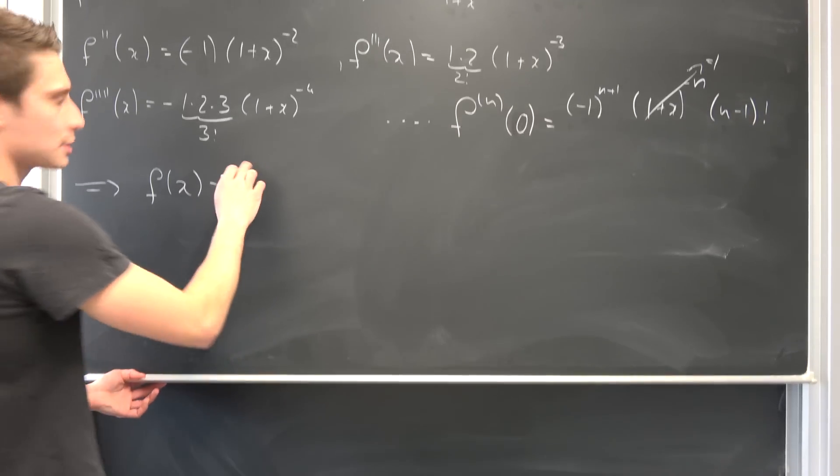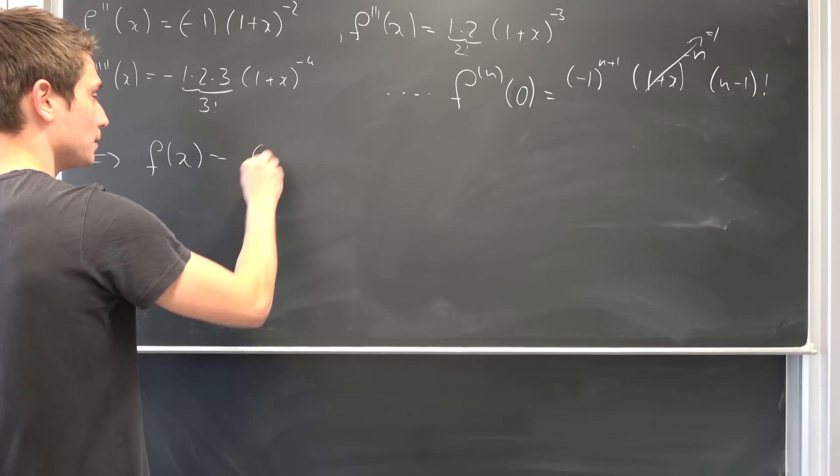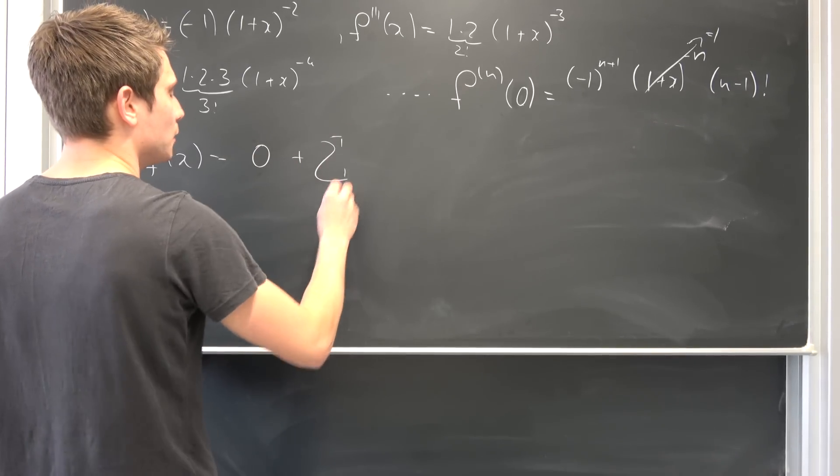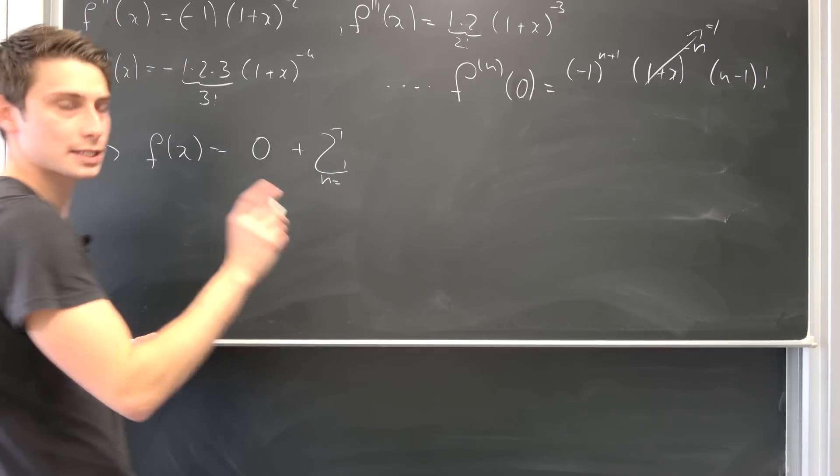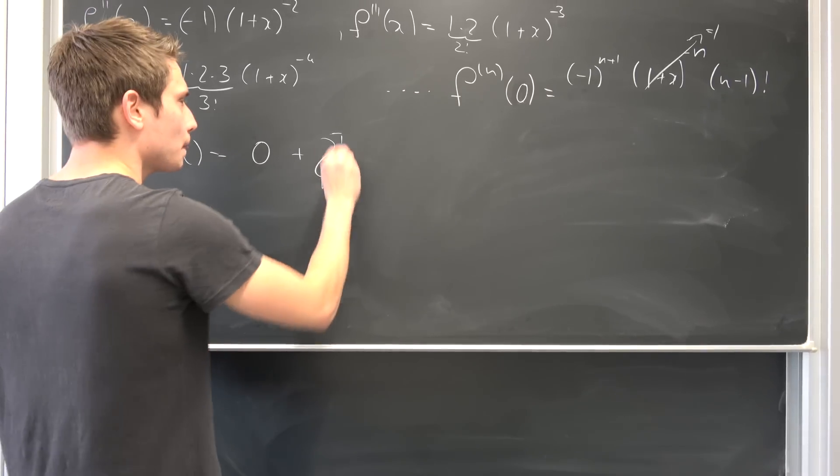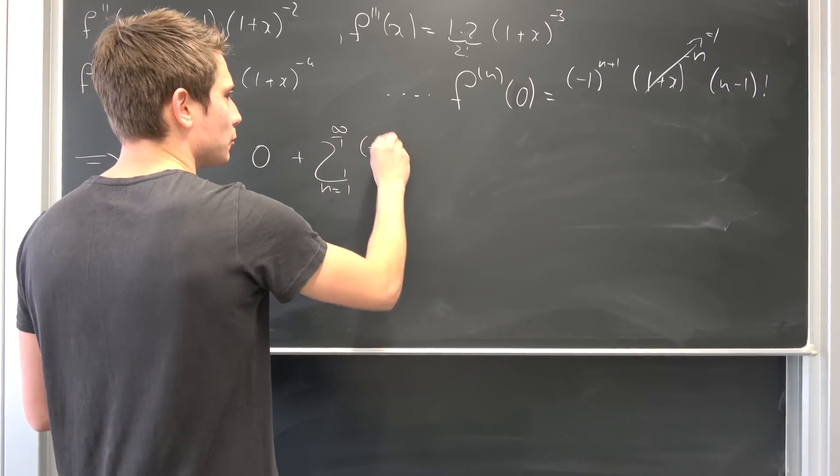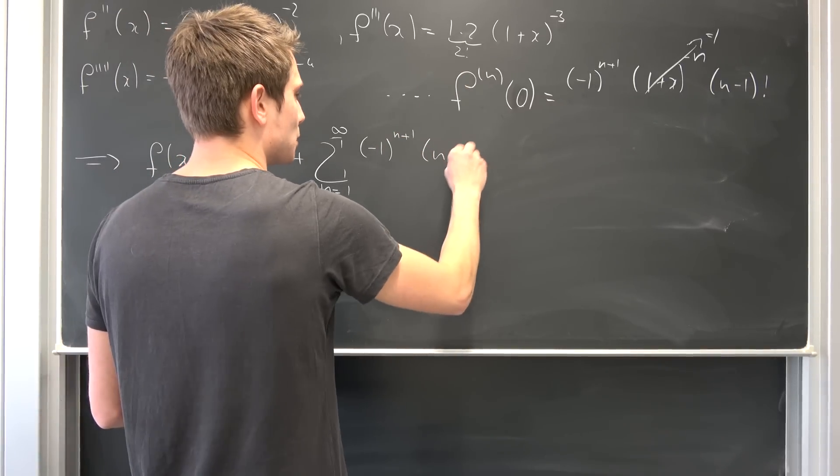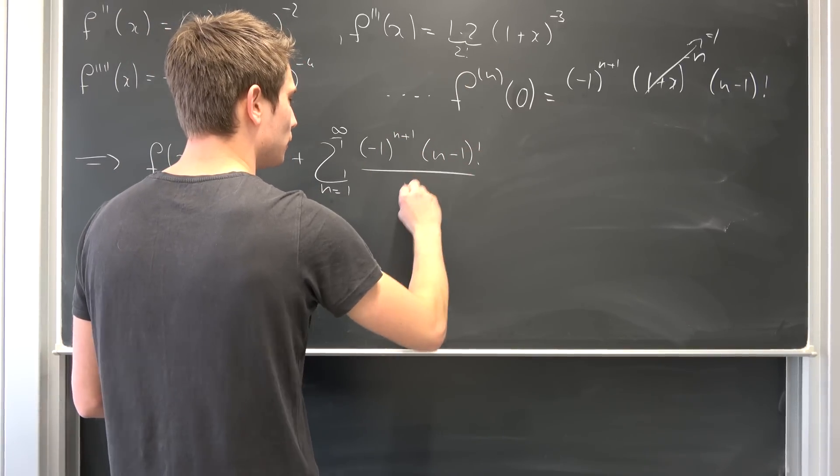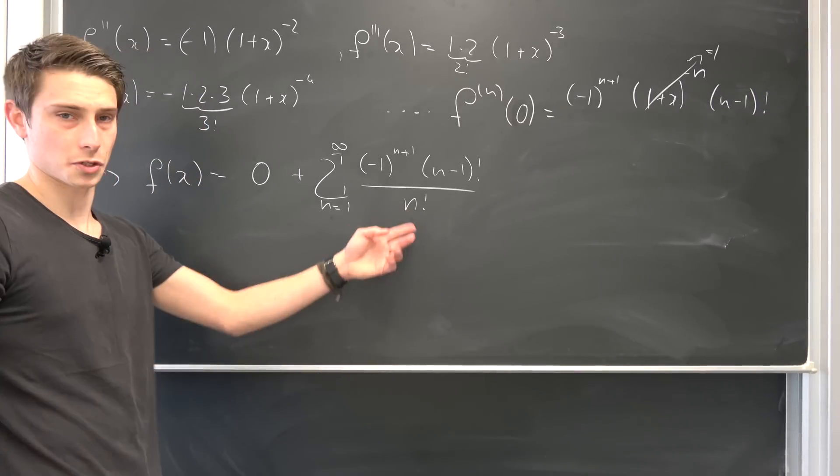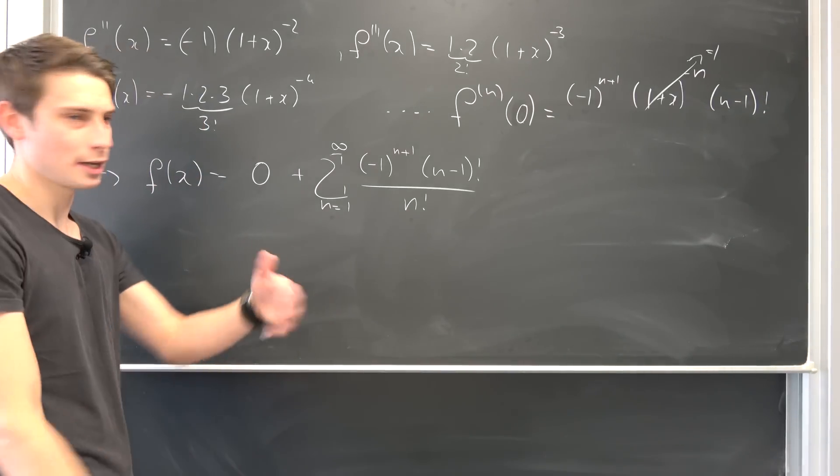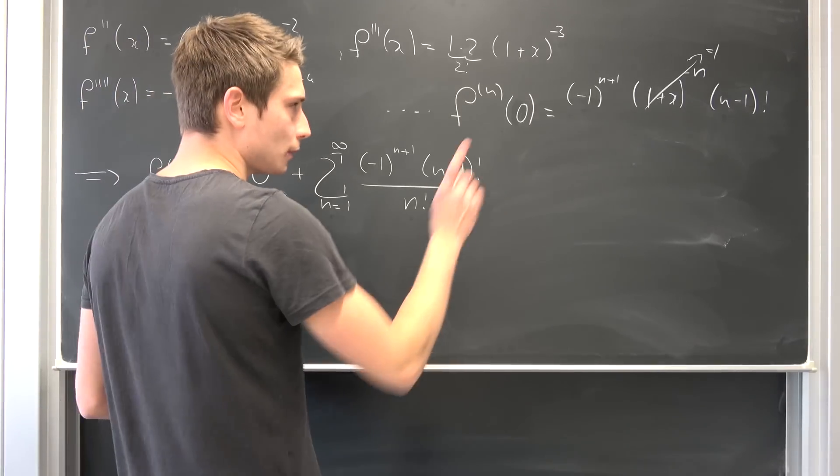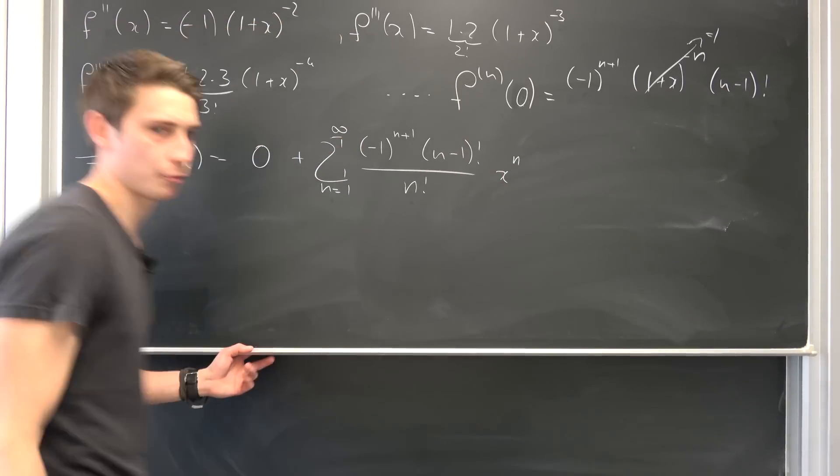So actually, we have to bring the 0th term to the outside. So f of x can be approximated as a Taylor series being, the first or 0th term is going to be 0, we can actually get rid of this in a second. Plus a sum running from, naturally it's going to start from n equals 1 now, to infinity of negative 1 to the n plus 1 power. Then we have times n minus 1 factorial over n factorial. Don't forget this term, because we are having a Maclaurin series expansion.